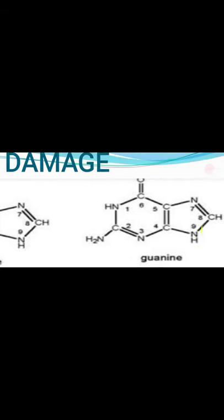Guanine has two exocyclic functional groups: at the 6th position a keto group, and at the 2nd position an amino group. The rest is the same as adenine — it is also a double ring. So to remember: adenine has 6-amino; guanine has 6-keto and 2-amino. That is the structure of guanine.